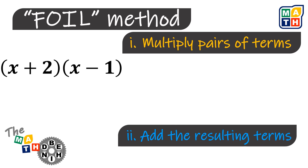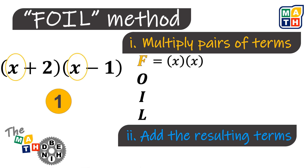Consider the given expression. Step 1 stands for the acronym FOIL. F is where we multiply the first terms of each binomial. O stands for the product of the outer terms.